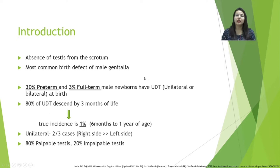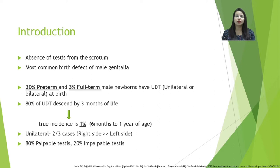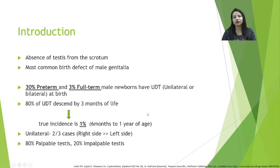The normal location of the testes is at the bottom of the scrotum. Whenever the testes are absent from the scrotum, this situation is known as cryptorchidism. This is the most common birth defect of male genitalia. Around 30% of preterm newborns and 3% of full-term newborn boys have undescended testes. Notably, 80% of these undescended testes descend by the third month of life, so the true incidence requiring management is only around one percent.